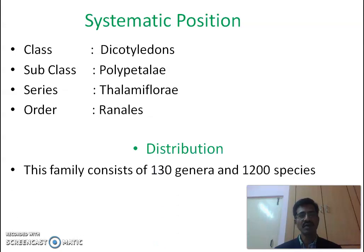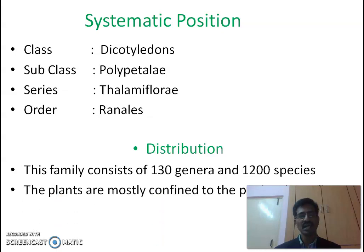Now we come to distribution. This family consists of around 130 genera and 1200 species, and the plants are mostly confined to Peninsular India.